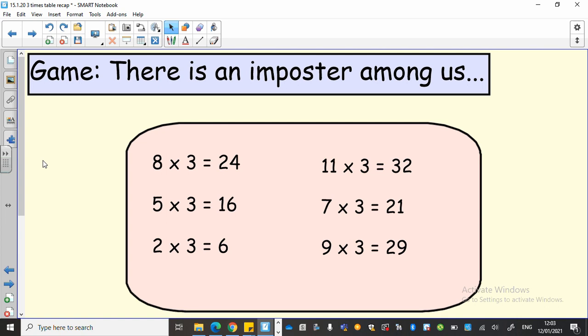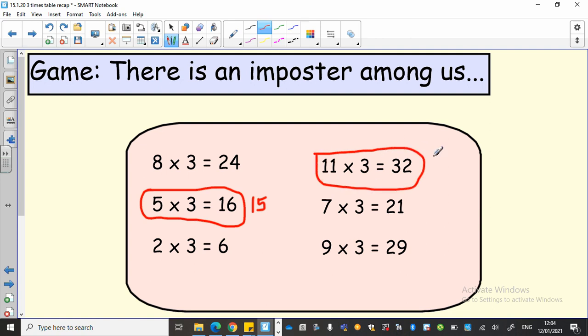Right, let's see if we can find these answers together then. So I can tell you that the imposters are this one here: five times three is not 16, but five times three is 15. The other imposter, there might be more than one of them, it's this one here: eleven times three is not 32, but it is 33. And there is one more - which one do you think it is? I can tell you it's this one here: nine times three is not 29, nine times three is 27. Very well done if you got those right!